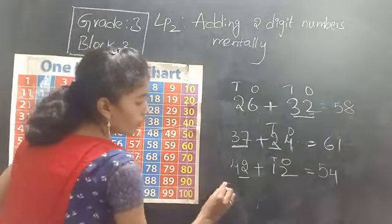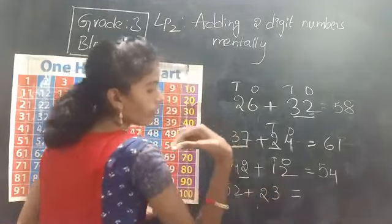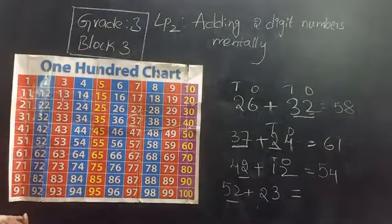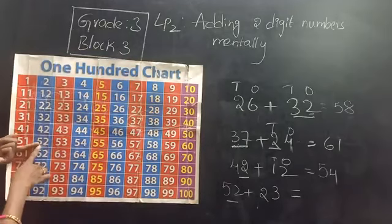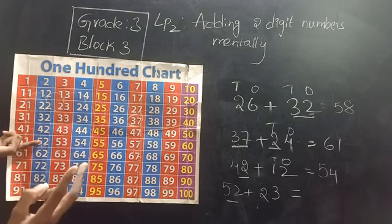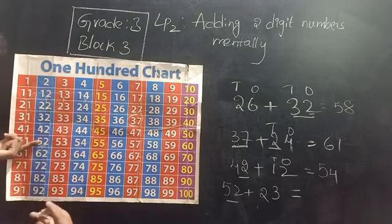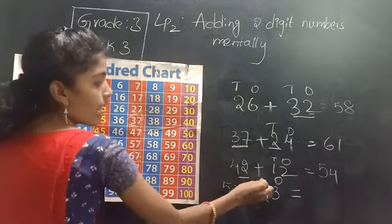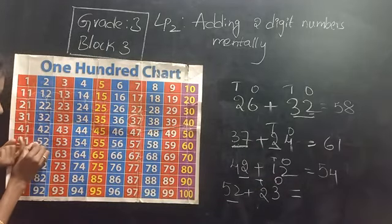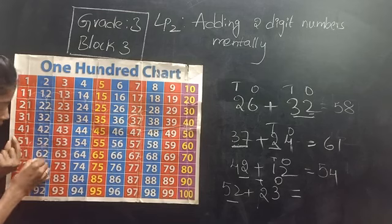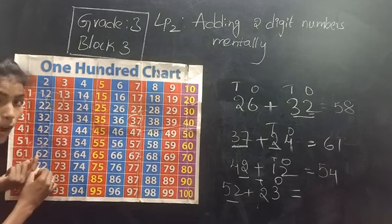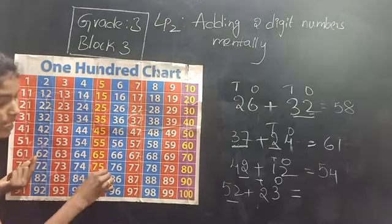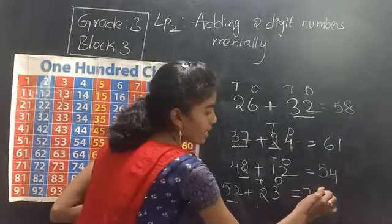Let me take one more example: 52 plus 23. Take 52 on the 100 chart. In 23 there are 2 tens and 3 ones. So go 2 steps down from 52: 52, 62, 72. Then go 3 steps right from 72: 1, 2, 3 — you reach 75. So the answer is 75.